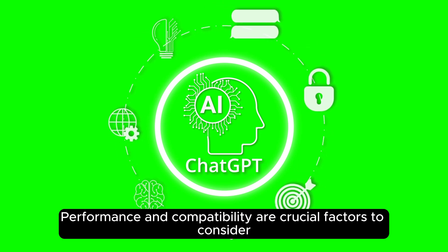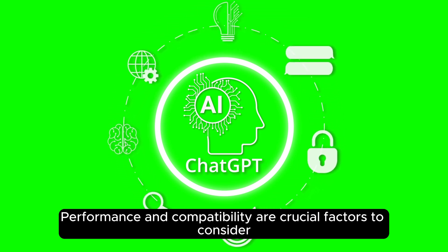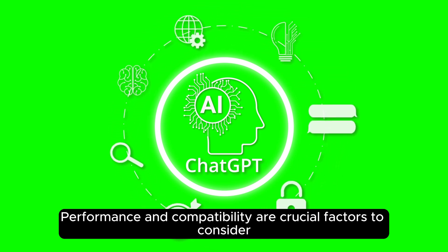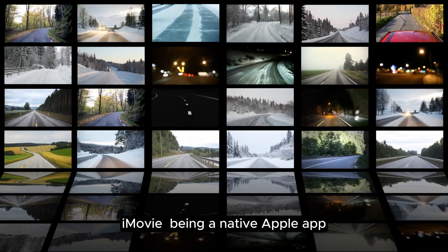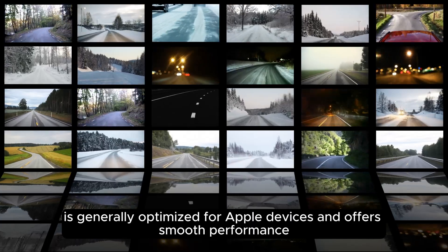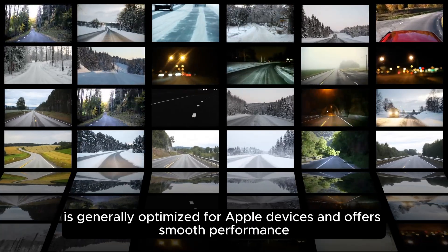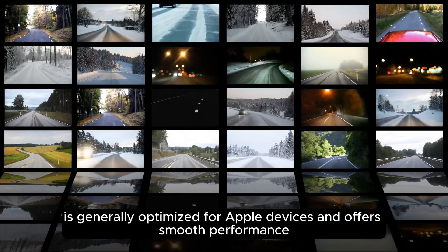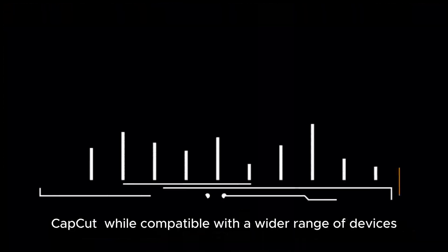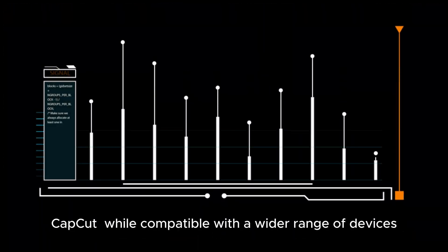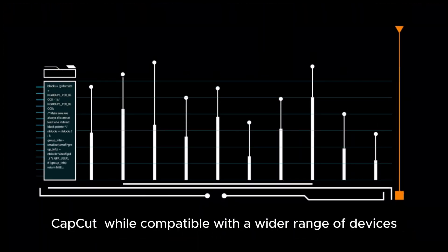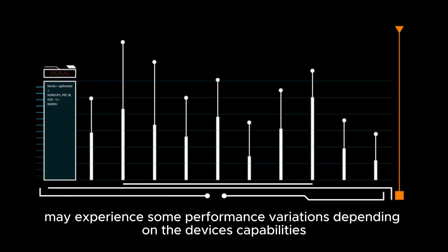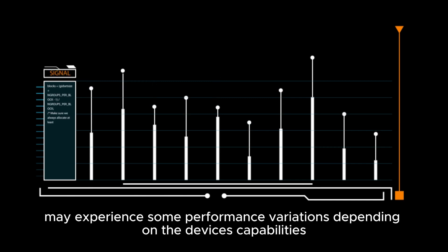Performance and compatibility: Performance and compatibility are crucial factors to consider. iMovie, being a native Apple app, is generally optimized for Apple devices and offers smooth performance. CapCut, while compatible with a wider range of devices, may experience some performance variations depending on the device's capabilities.